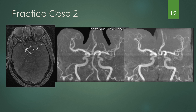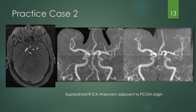Practice case two. Follow the vessels of the Circle of Willis, starting at the most common locations. Is there an outpouching at the anterior communicating artery? No. Then go to the supraclinoid ICA and look at the second most common location — the posterior communicating artery. There's a saccular outpouching that on MIP images is not going anywhere, projecting posteriorly and inferiorly. This is a supraclinoid ICA aneurysm adjacent to the PCOM origin.